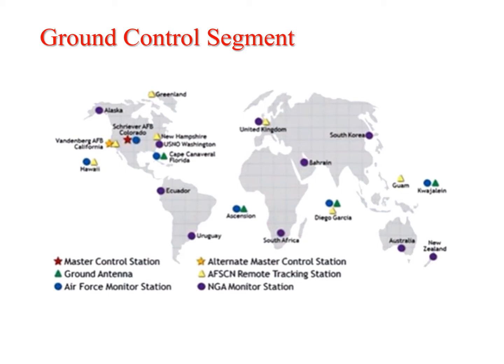We have also seen the different ground control segments, with the various positional locations of ground control points around the globe. Some may have antennas and some may not. The triangle with the green color shows the combination along with the Air Force monitor station.